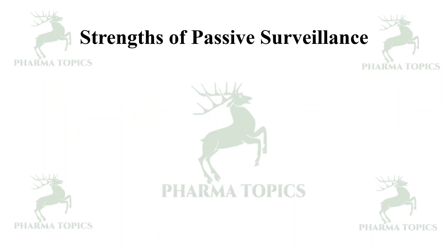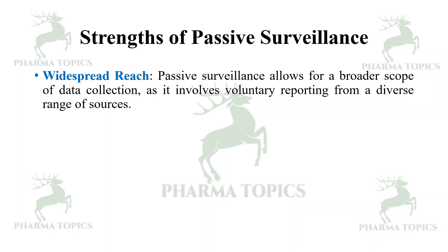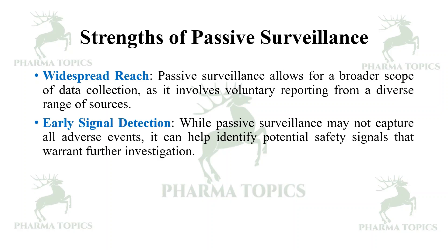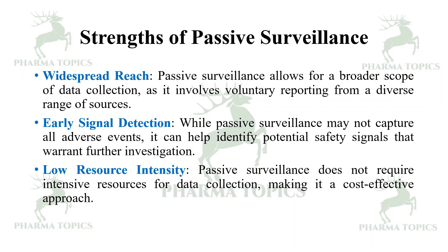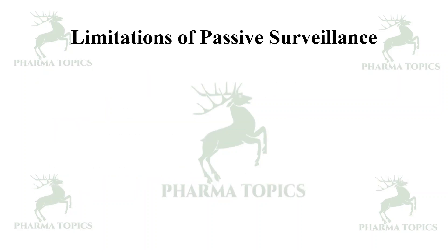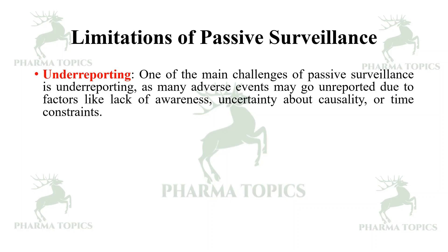Strengths of passive surveillance: First, widespread reach — passive surveillance allows for a broader scope of data collection as it involves voluntary reporting from a diverse range of sources. Second, early signal detection — while passive surveillance may not capture all adverse events, it can identify potential safety signals that warrant further investigation. Third, low resource intensity — it does not require intensive resources for data collection, making it a cost-effective approach.